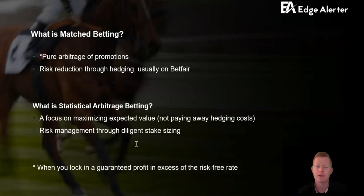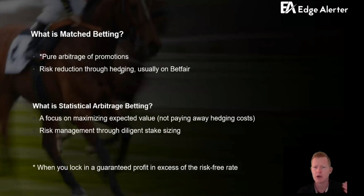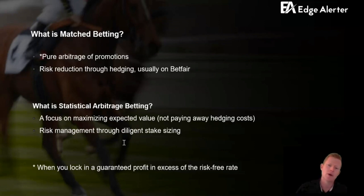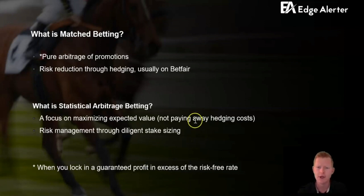They're trying to lock in a guaranteed 5–10% profit on turnover. There's a hedging component, typically through Betfair, though you can do it through other bookies too. Statistical arbitrage, on the other hand, is all about focusing purely on expected value. You don't need to pay away hedging costs or Betfair commission — it's all about long-term expectancy. Risk management is handled through correct stake sizing rather than hedging.